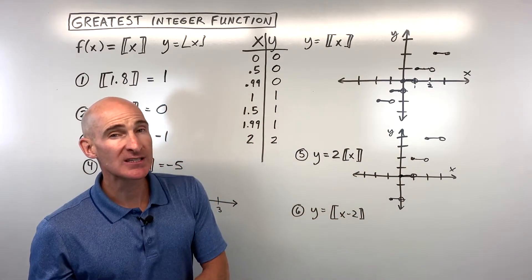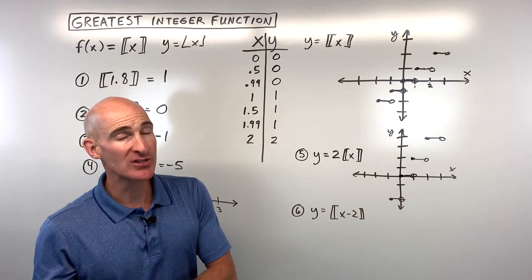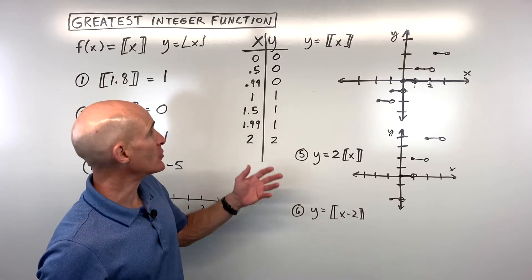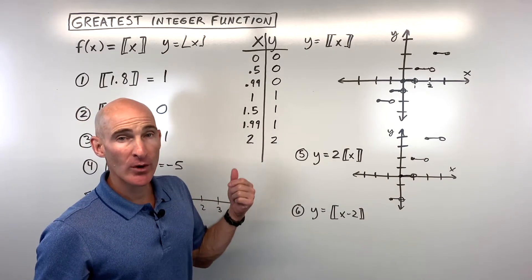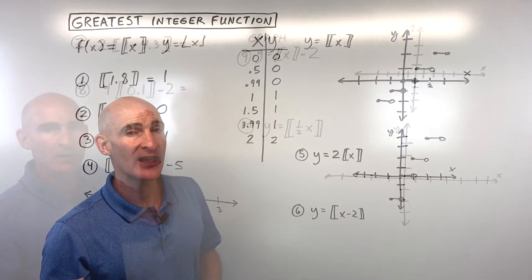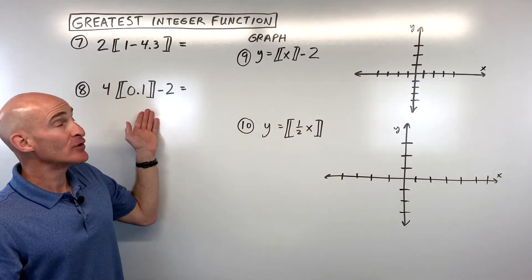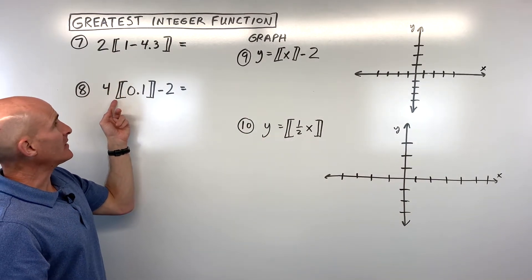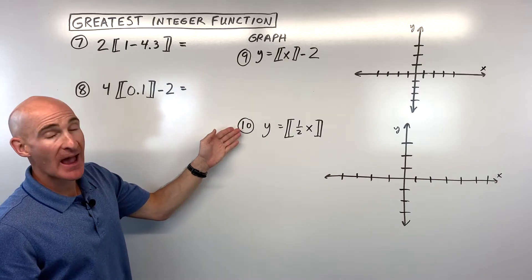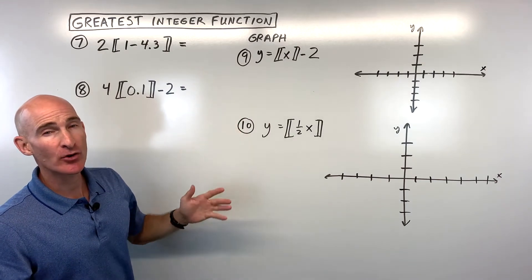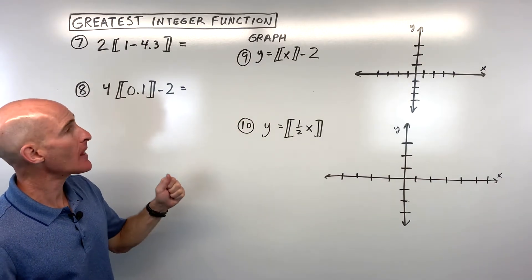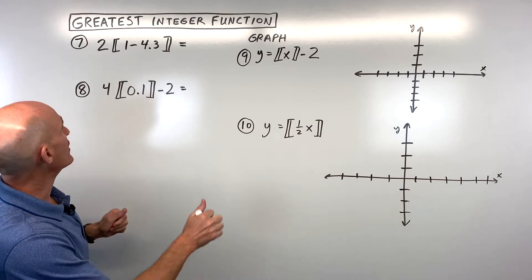So everything is shifting right 2. Now let's take a look at some more examples. I'll give you an opportunity to practice — see if you can evaluate numbers 7 and 8, and graph numbers 9 and 10. Go ahead and pause the video, see what you get, and we'll go through them together after you're done.